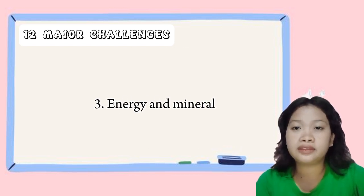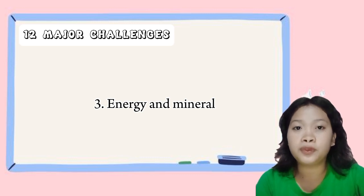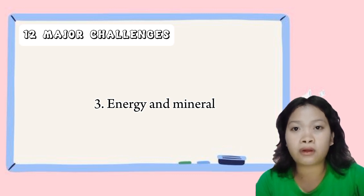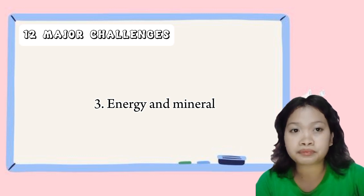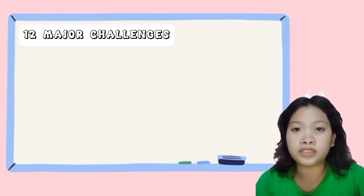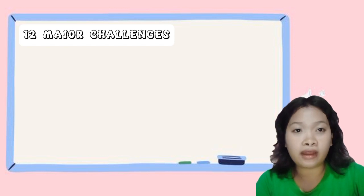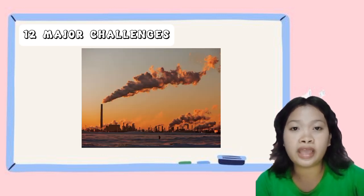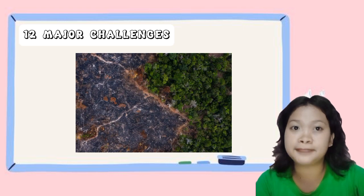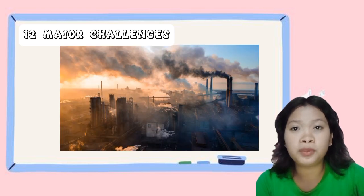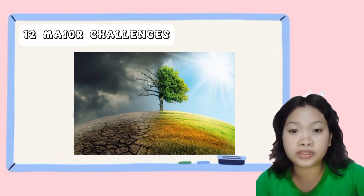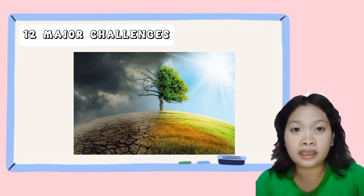Next is energy and minerals. Finding sustainable sources of energy and minerals is a major challenge as our current methods of extraction and use are often harmful to the environment. The extraction of fossil fuels such as coal, oil, and gas has a significant environmental impact including air and water pollution, habitat destruction, and greenhouse gas emissions. The transition to renewable energy sources is necessary to reduce these impacts and mitigate climate change.